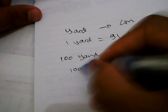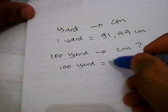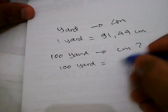The first thing you need to do is write down this number again, 100 yards, and give it an equal sign. Then you need to write down this 100 again.